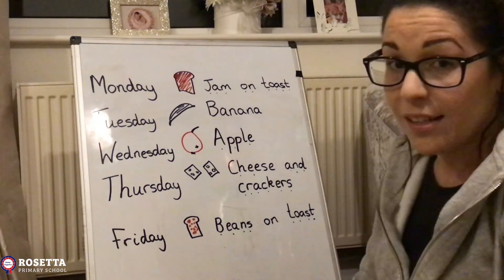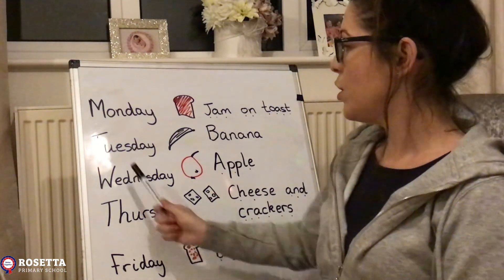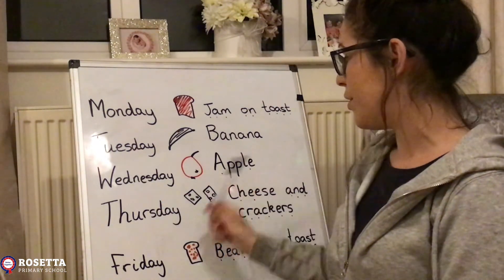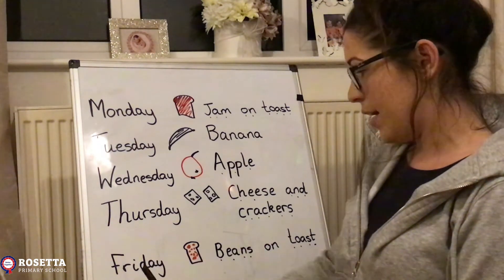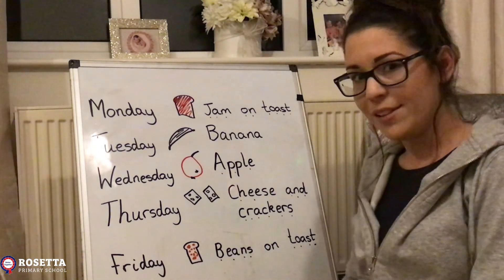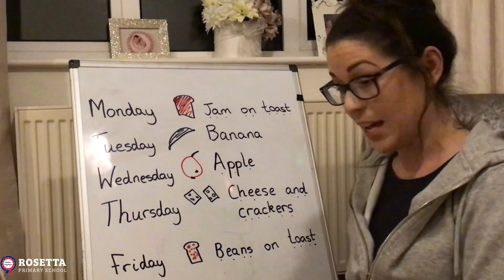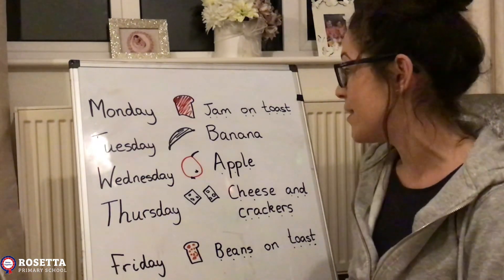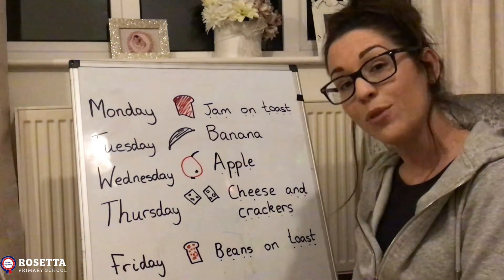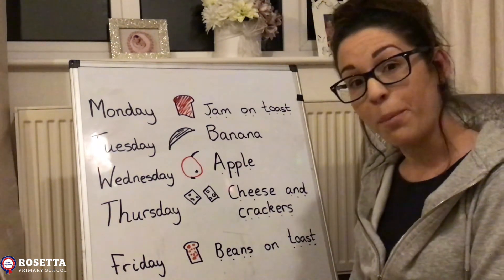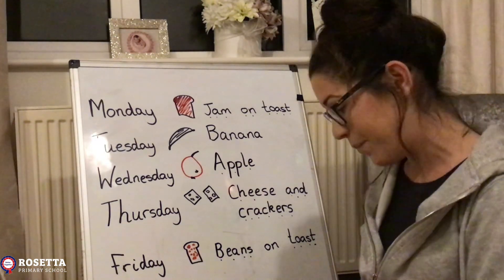Now I need to check my work. Monday — jam on toast. Tuesday — banana. Wednesday — apple. Thursday — cheese and crackers. Friday — beans on toast. My food plan looks delicious and it's making me hungry! I hope you have lots of fun making your plan. Remember, make sure it's your best work because you're going to need it for tomorrow's lesson and Friday's lesson. Have fun!